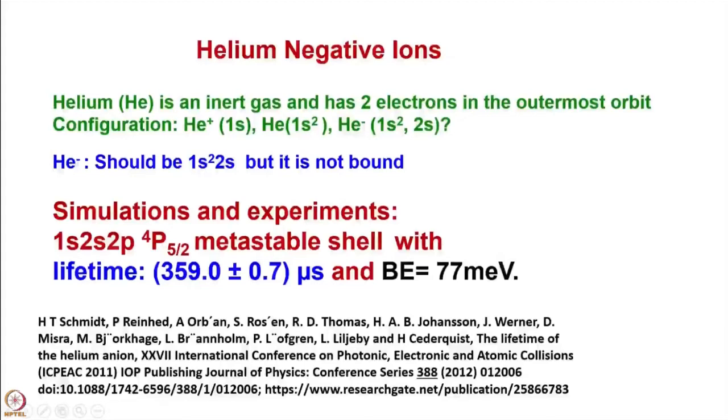In the case of pelletrons or even tandem, this helium is accelerated further. First column section, the He minus will be accelerated. In the terminal, in the stripper, it is possible to remove both the electrons, which was not possible in the case of Van de Graaff because of power limitation. Here it is possible. So you get three times energy rather than two times. That's the advantage of pelletrons as well as tandem.